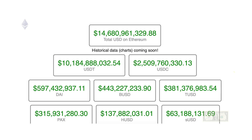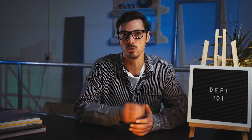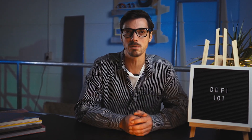You might be surprised to know that there is almost $15 billion in stablecoin liquidity currently on Ethereum. Stablecoins have been a huge breakthrough in DeFi because they allow users to transfer value with a reliable price point, versus the highly volatile markets normally found in cryptocurrencies.